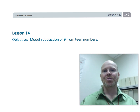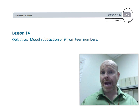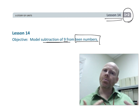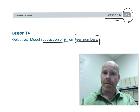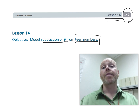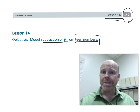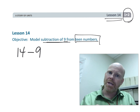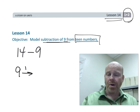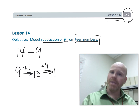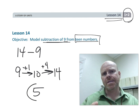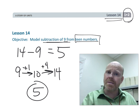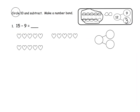This is first grade module 2 lesson 14. In this lesson we're going to continue subtracting 9 from the teen numbers, but instead of directly using the subtracting-from-10 strategy, we're going to guide students towards another strategy. Ultimately — for example with 14 minus 9 — we want students to say: 9 plus 1 is 10, plus the extra 4 makes 5, so 14 minus 9 is 5. This is almost like a transitional lesson.